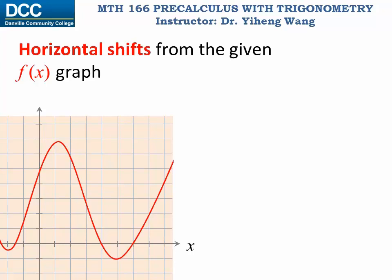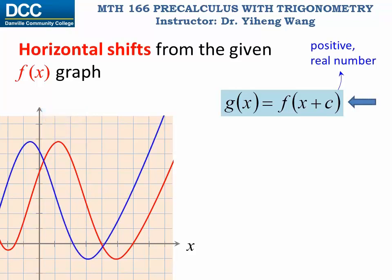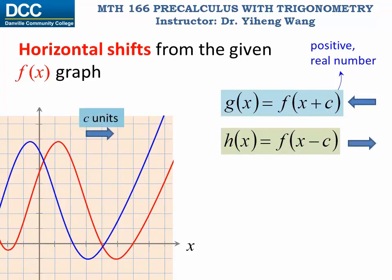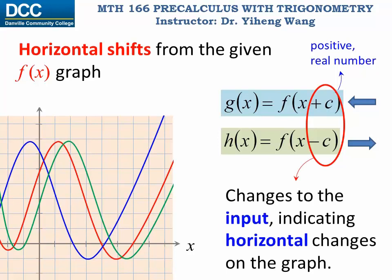For horizontal shifts, if we want to sketch g(x) = f(x + c), where c is a positive real number, we shift the f function graph to the left by c units. These changes are inside the parentheses — they are changes applied to the input — and therefore they indicate horizontal changes on the graph.